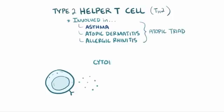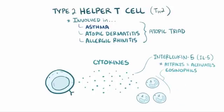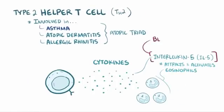These TH2 cells release cytokines to communicate with other cells. One cytokine is interleukin-5, which is a small peptide that attracts and activates eosinophils. It turns out that blocking interleukin-5 has been shown to help some patients with asthma.